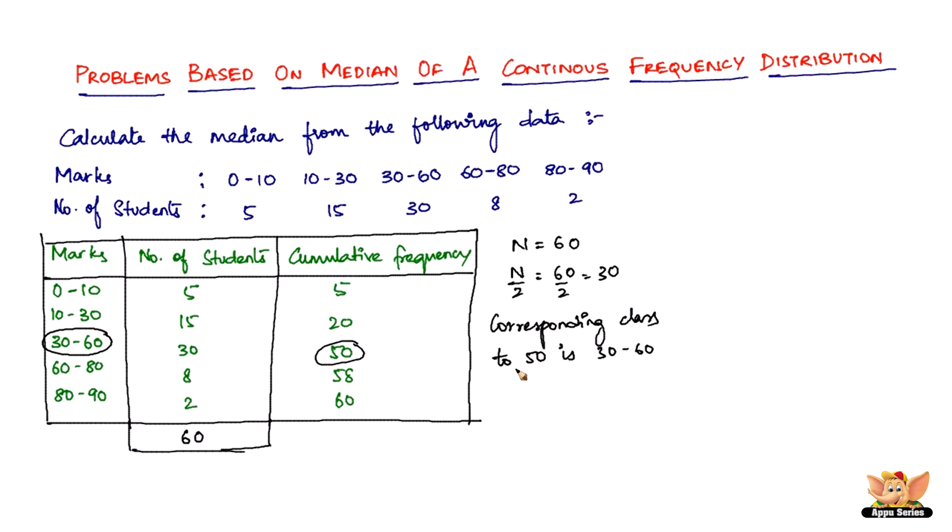So it's 30 to 60. So once you get this data 30 to 60, the next four things that you find is therefore L equals 30, that is the lower limit. And then the frequency, that is small f, equals to the frequency corresponding to that class limit, which is 30.